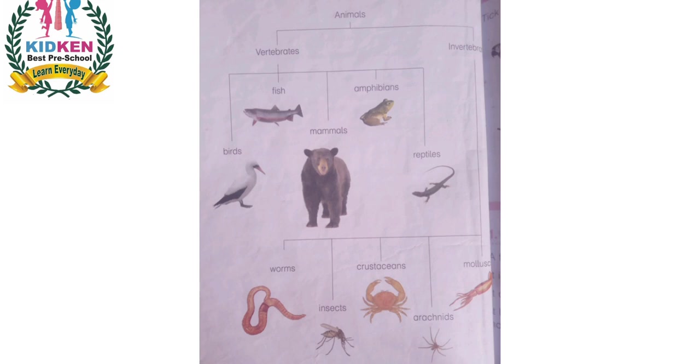Invertebrates are those animals which do not have a backbone, such as worms, crustaceans, insects, arachnids, and molluscs.